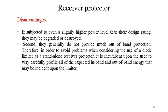The disadvantages of diode limiters include: if subjected to even a slightly higher power level than their design rating, they may be degraded or destroyed. Second, they generally do not provide much out-of-band protection. Therefore, when considering the use of a diode limiter as a standalone receiver protector, it is incumbent upon the user to very carefully profile all of the expected in-band and out-of-band energy that may be incident upon the limiter.